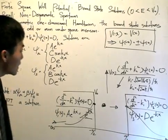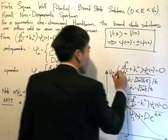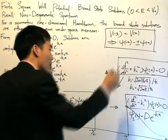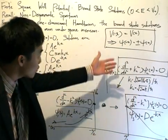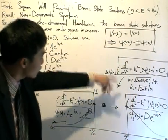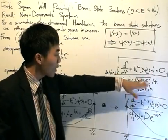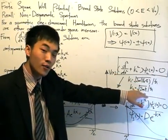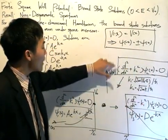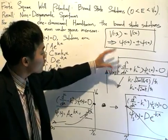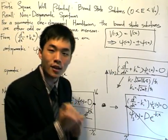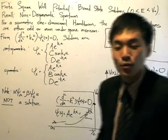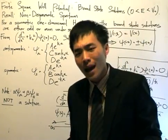The Schrödinger equation inside the well is given by a rearranged form where k2 = √(2mE)/ℏ — there's no potential term in this region. To answer what the solutions are, we need to go back to one of the theorems regarding bound states.